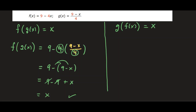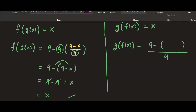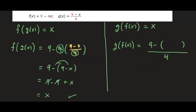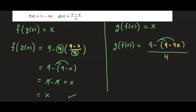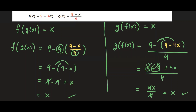Now let's check the other direction: g of f of x. We take f, which is nine minus four x, and plug it into g. g does nine minus x all over four, so we put f of x in there: nine minus (nine minus four x), all over four. Distributing the negative one gives nine minus nine plus four x, all over four. The nines cancel to give four x over four, and the fours cancel. We have x. Both compositions hold, so f and g are inverses of each other by the inverse function property.